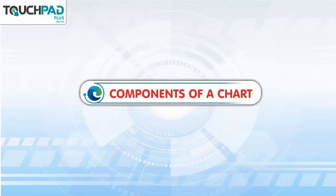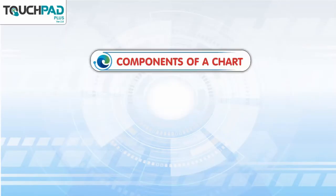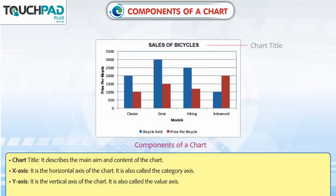Components of a Chart. Chart Title: It describes the main aim and content of the chart.